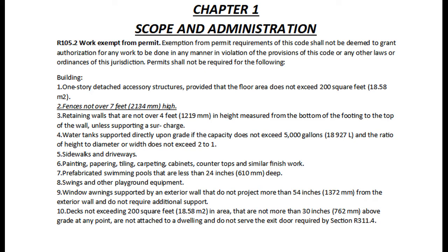Chapter 1 Scope and Administration. R105.2 Work Exempt from Permit. Exemption from permit requirements of this code shall not be deemed to grant authorization for any work to be done in any manner in violation of the provisions of this code or any laws or ordinances of this jurisdiction. A permit shall not be required for the following.